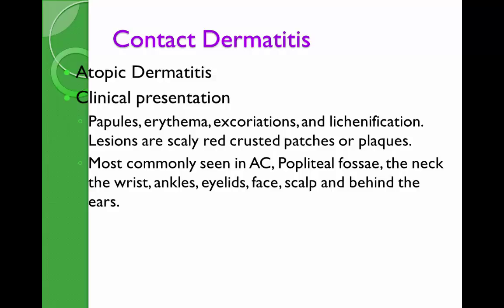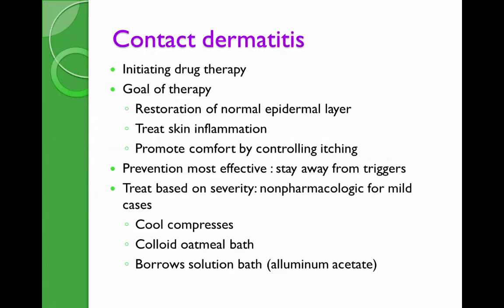Treatment includes supportive care with moisturizers and dressings, antihistamines for pruritus, and avoiding precipitant factors — because if you continue using the same allergen or irritant, the skin damage continues. Immunomodulators and ultraviolet light can be helpful. You need to hydrate the skin, treat inflammation, promote comfort for itching with cool compresses, colloidal oatmeal baths, Burow's solution, and use soap substitutes.